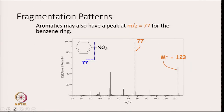Aromatics may also have a peak at m/z = 77 for the benzene ring. For example, with nitrobenzene, breaking will take place at this position and you expect a peak at 77. If there is no CH3 group attached to the benzene ring, this will be the base peak.